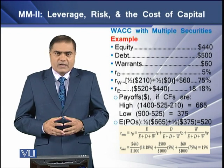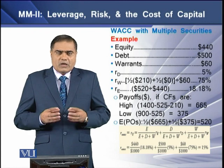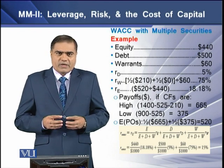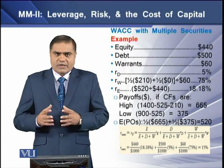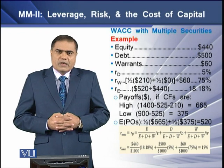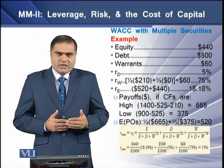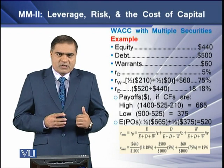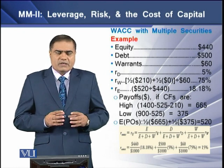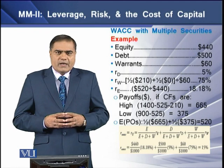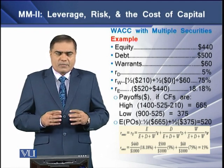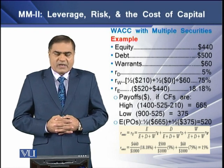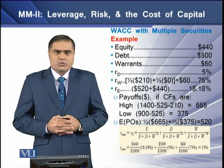To determine the return on levered equity, we have an additional computation where we first calculate the expected value of payoffs on the equity, and using these payoffs we have determined the return on equity which is 18.18%. Now we determine the proportional weights of the equity, debt, and warrants, then multiply each security's return by its computed weight to get the weighted cost. Summing up the weighted costs of the three securities gives us the WACC, which is equal to 15%.